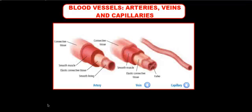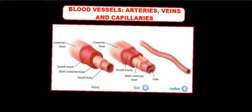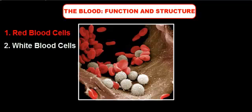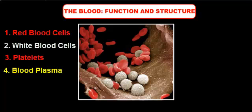The third part of the cardiovascular system is the blood. Blood has four parts: red blood cells, white blood cells, platelets, and blood plasma.